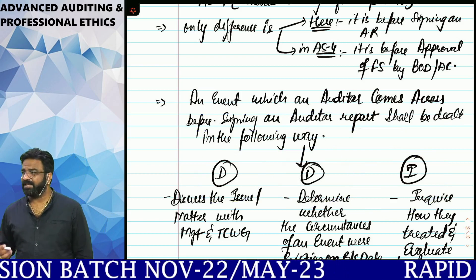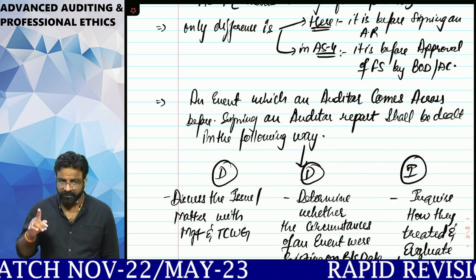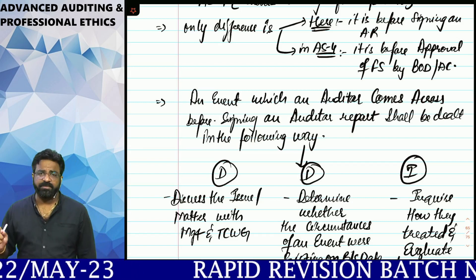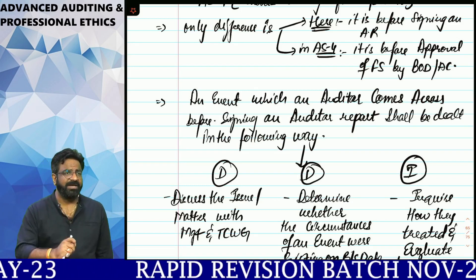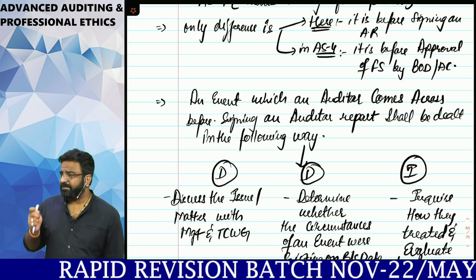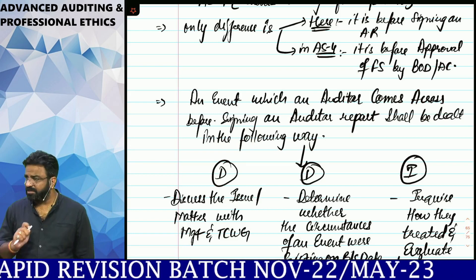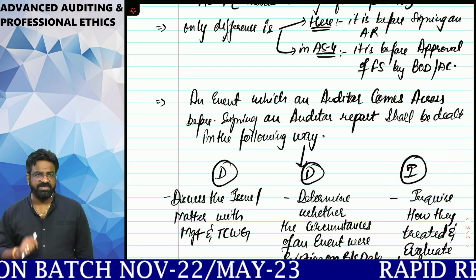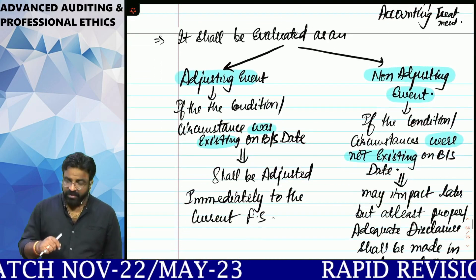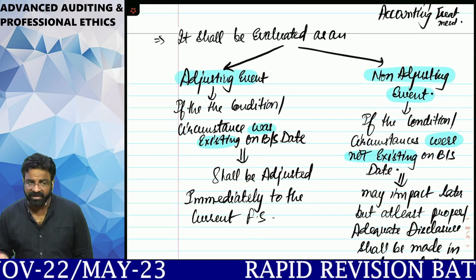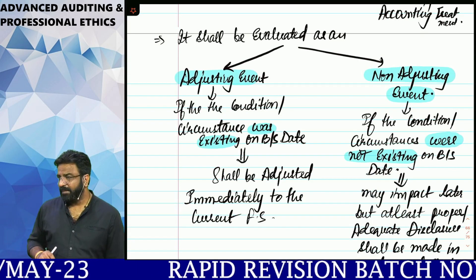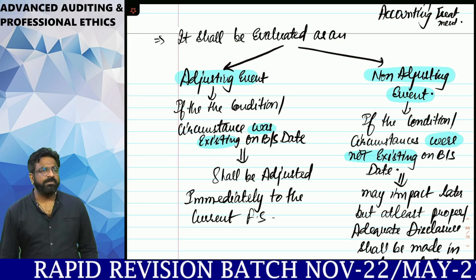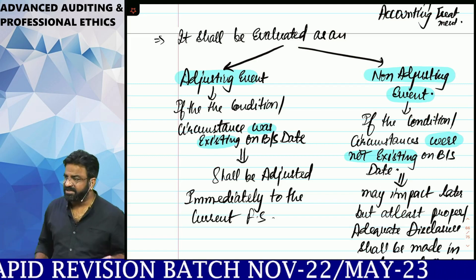DDI stands for: Discuss the event with management and those charged with governance (TCWG) — that is the first D. The second D is to Determine, along with management and TCWG, whether it impacts the financial statements. And if the impact is huge, the third step is to Inquire from management whether it is an adjusting event or a non-adjusting event. Case 1 is very similar to AS4.